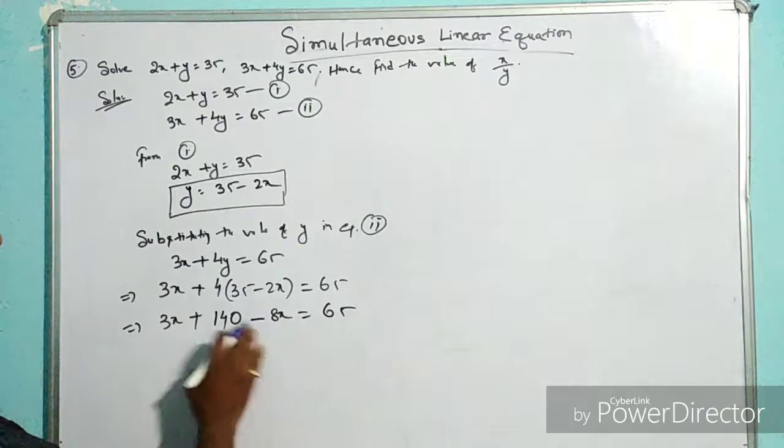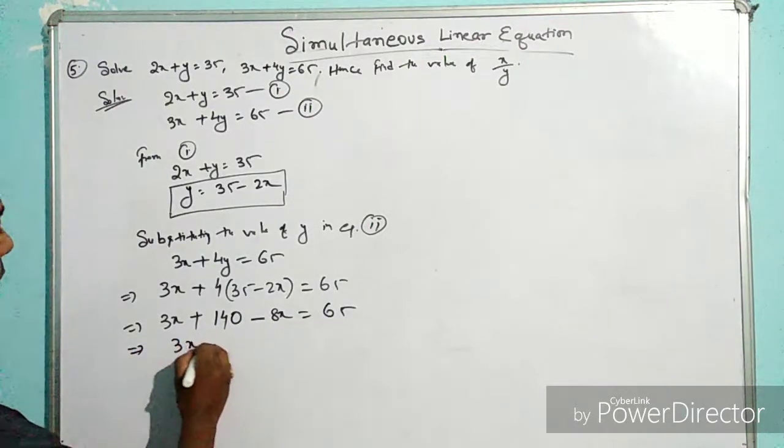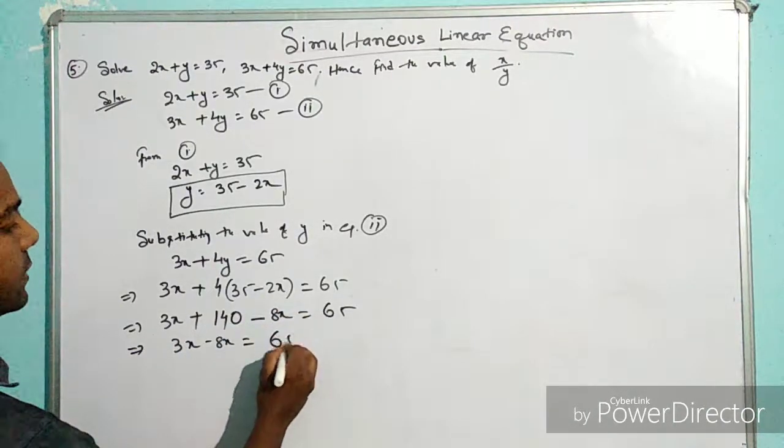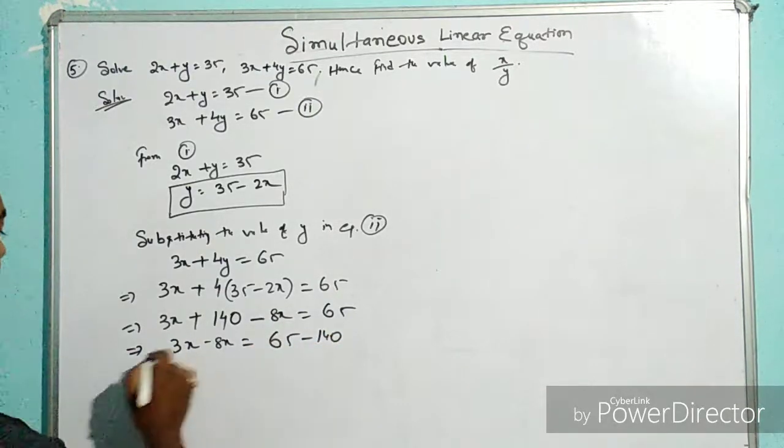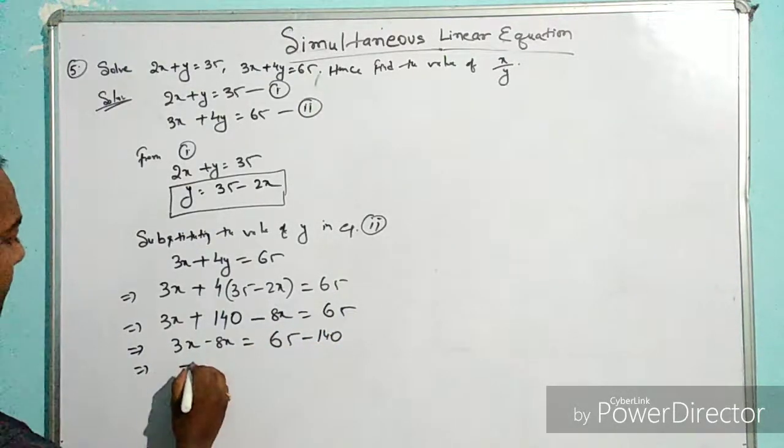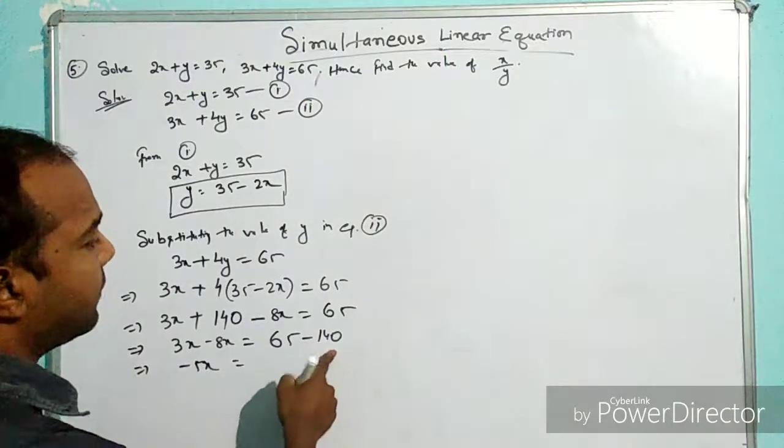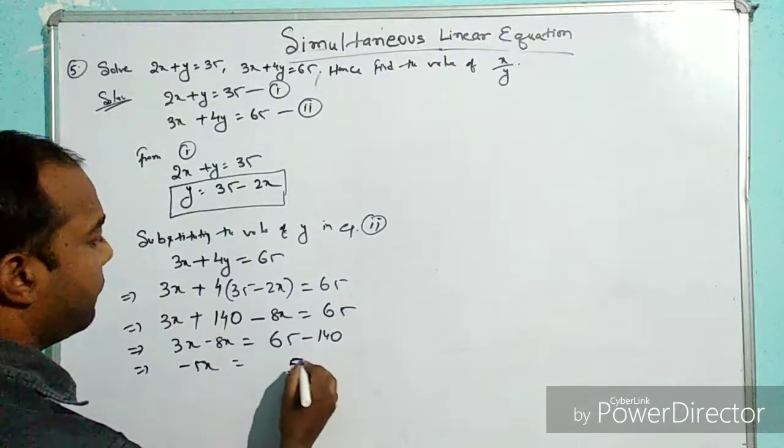Now collecting the x terms: 3x - 8x = 65 - 140. This gives us -5x = -75.